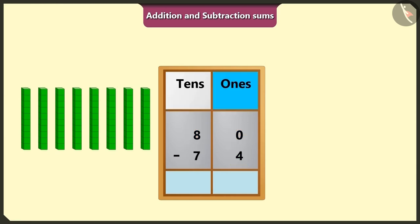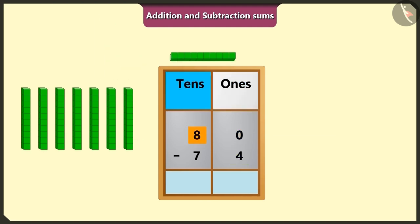First of all, we will do subtraction of numbers of the box of ones. Here, we cannot subtract 4 from 0. So, we will borrow 1 ten from 8 tens.